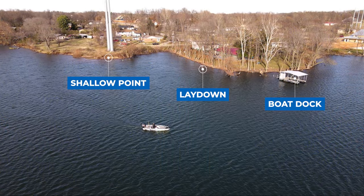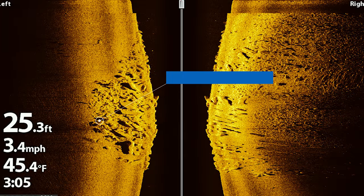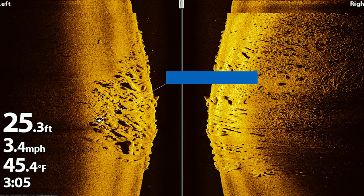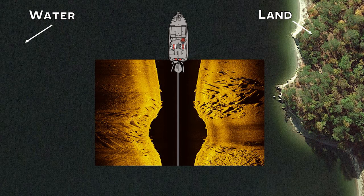Much like getting an aerial view of this bank to see what visible cover we can find, side imaging on your fish finder is designed to give you an aerial view of what's on the bottom of the lake. The way side imaging works is that it will scan to the right and to the left of your boat 60 to 100 feet, so that you can see any available cover that's out in the middle of the lake that you can't visibly see with your eyes.